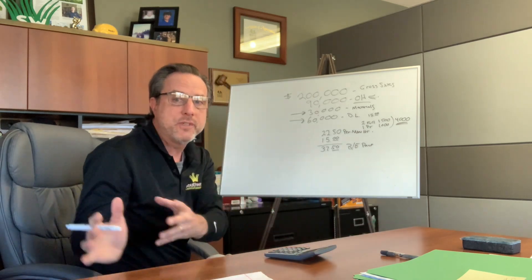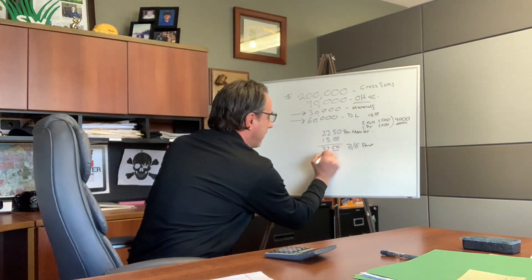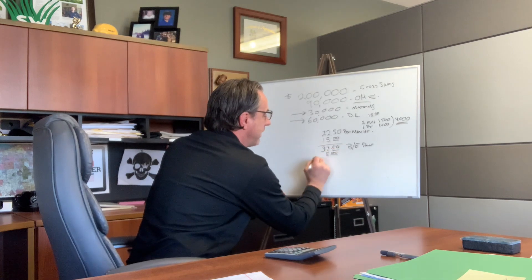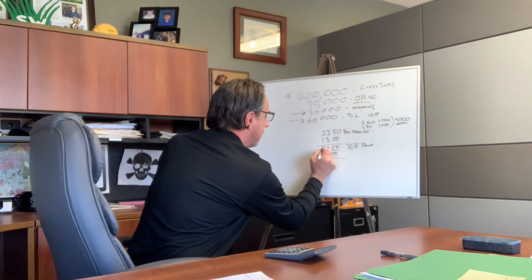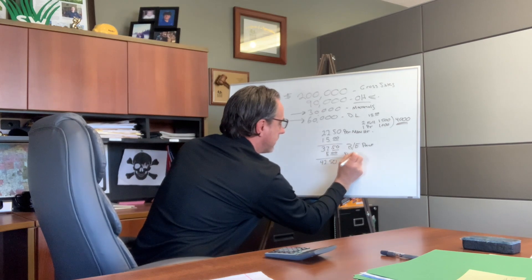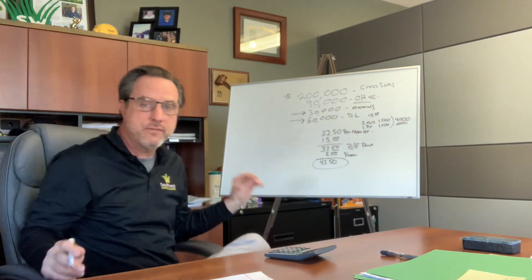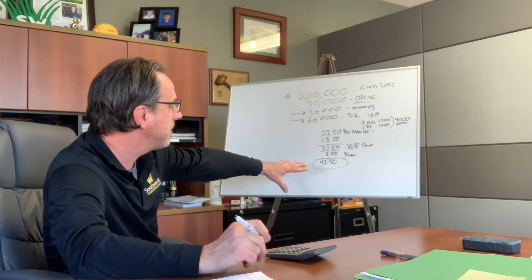Now we figure out our profit. In this industry you're looking at 10–15% profit, maybe 20% if you're doing really well. To keep the numbers simple, let's say we want $5 an hour in profit — which will roughly add up to about 10%. So $37.50 + $5.00 = $42.50. That is your dollar-per-hour rate of what you should be charging your customers.